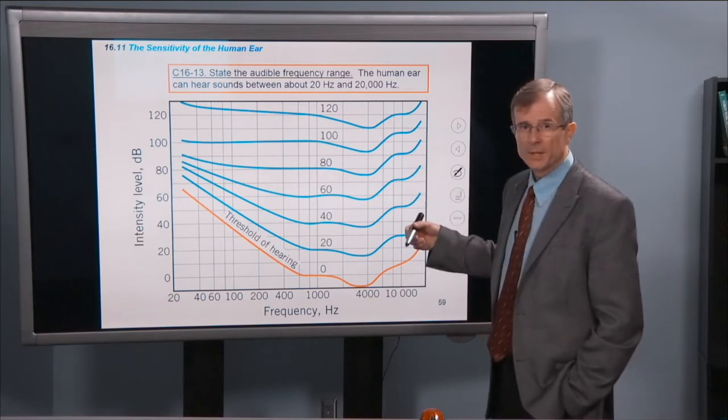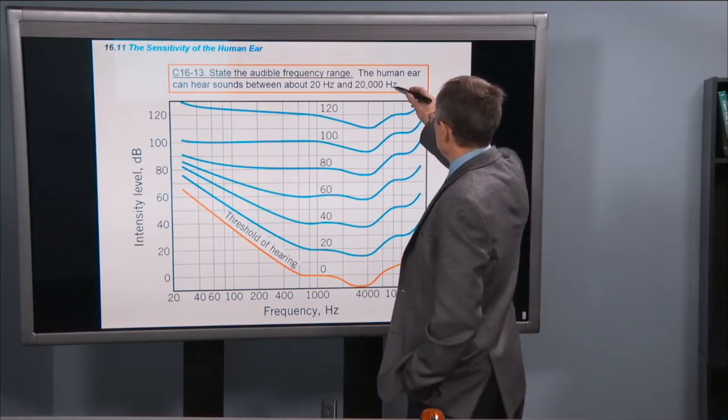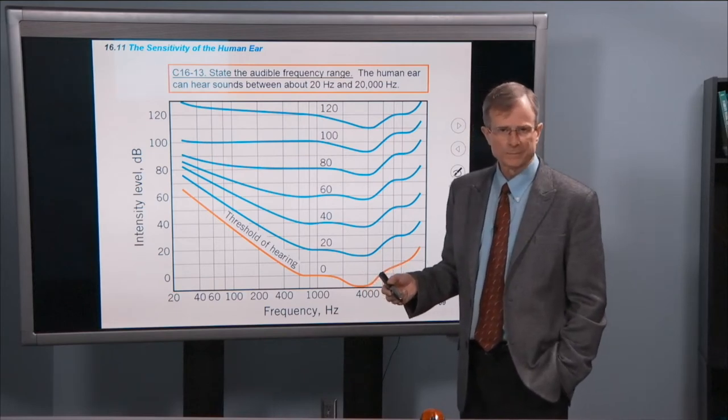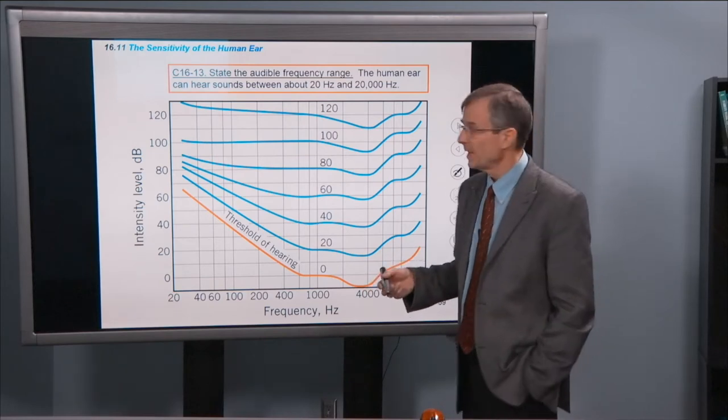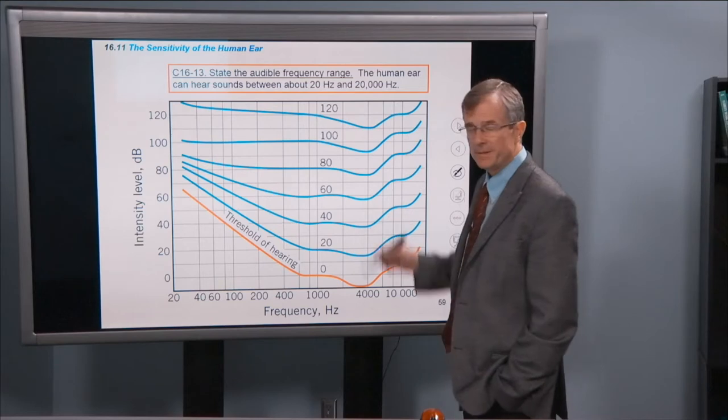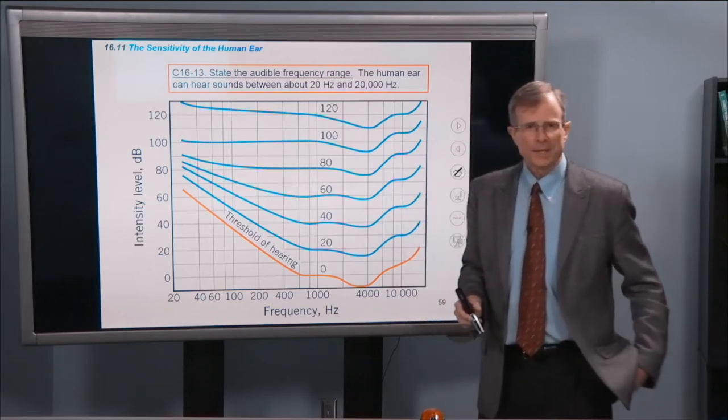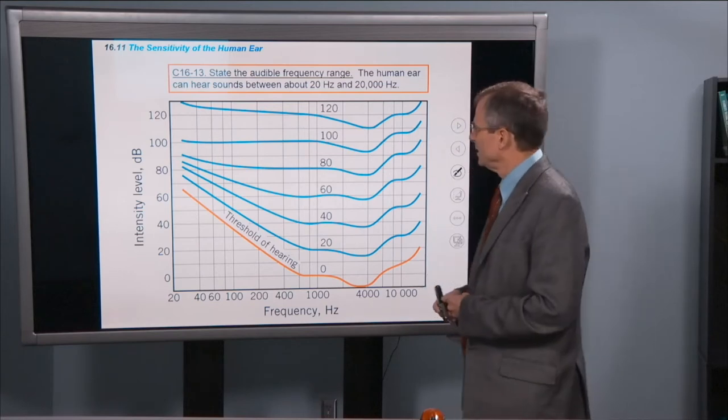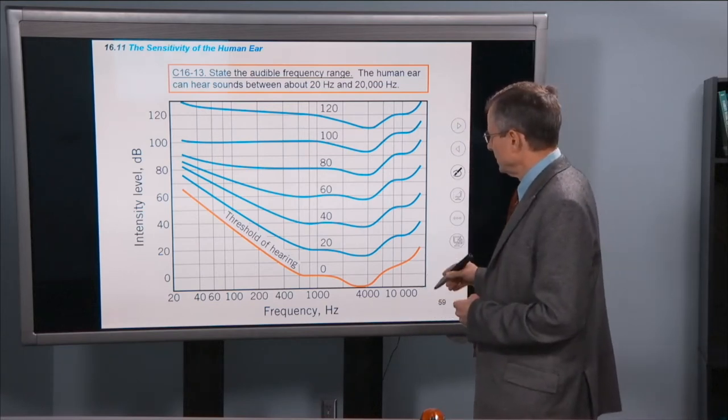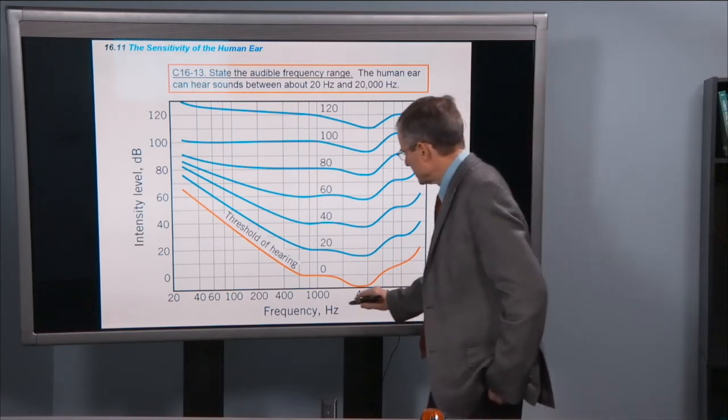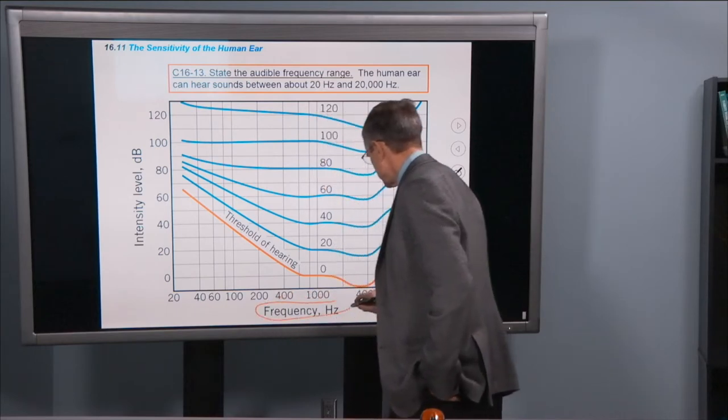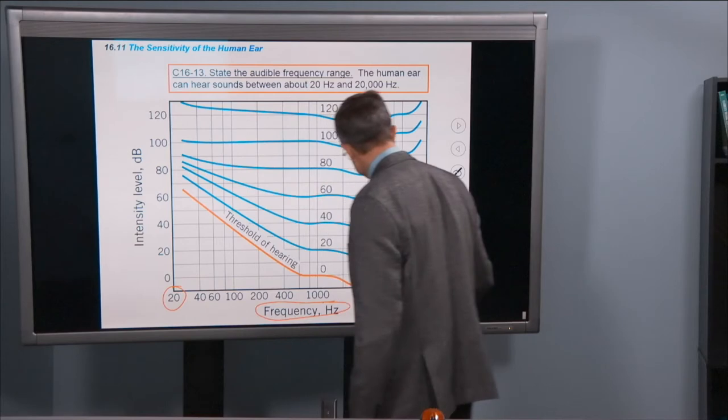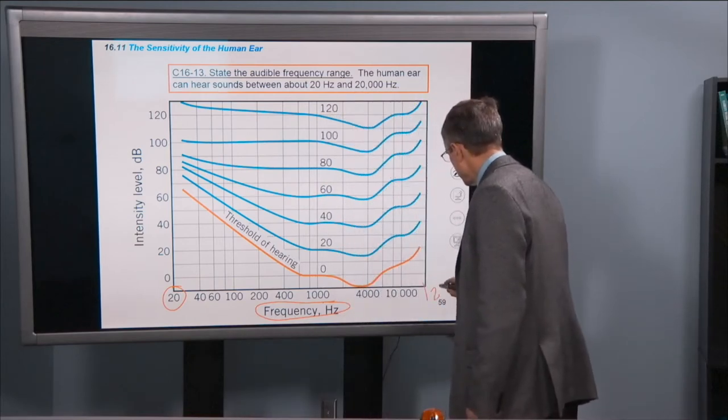So here's the bottom line captured in the concept. The human ear can hear sounds roughly between about 20 hertz, 20 cycles per second, and about 20,000 hertz. And it can hear these as audible tones. So if we look at the frequency on this axis, here's 20 hertz, and here's 20,000 hertz.